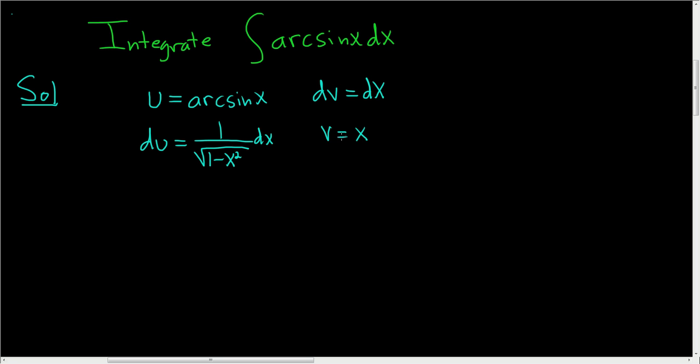Now we'll use the formula for integration by parts. The arcsine of x is equal to uv, so x arcsine of x, minus the integral of vdu. So x over the square root of 1 minus x squared dx.